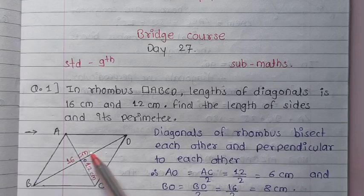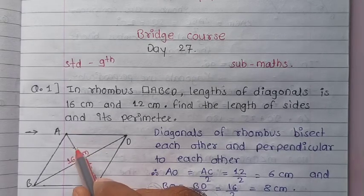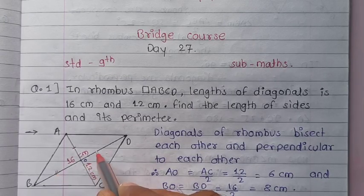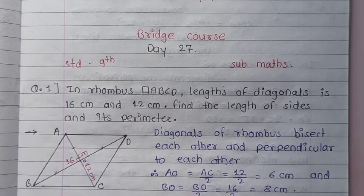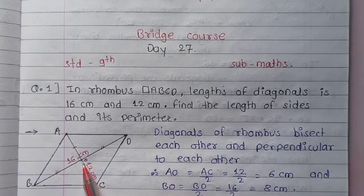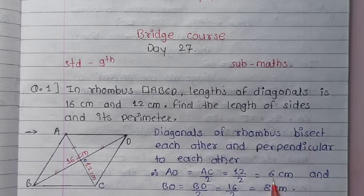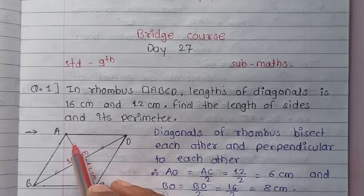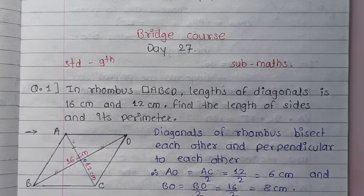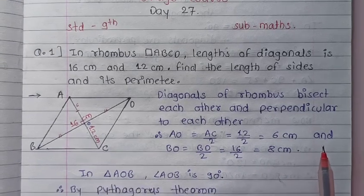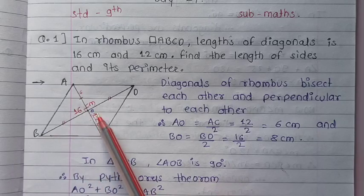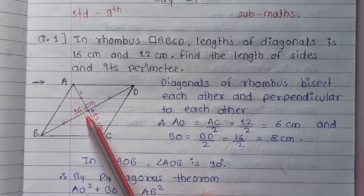So the half-diagonal AC divided by 2 equals 8 cm, and BD divided by 2 equals 6 cm. Therefore AO is equal to 8 cm and BO is equal to 6 cm, and the angle at O is 90 degrees.